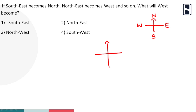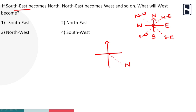Look at the screen. Southeast becomes north — so southeast is to become north. Generally, this is a northeast direction, this is the southeast direction, this is the southwest direction, and this is the northwest direction. So here, southeast becomes north.